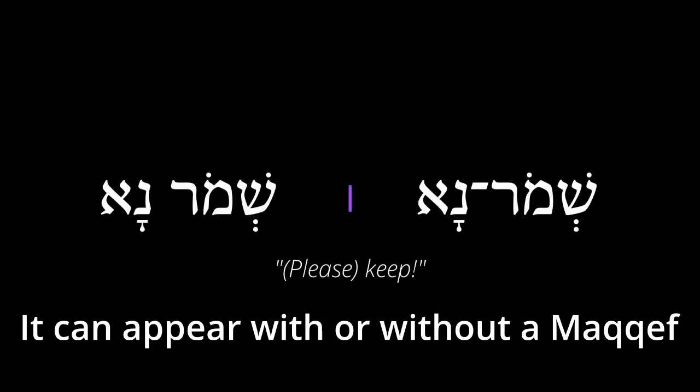There's another particle to be aware of, and that's na. It will follow an imperative, and it basically demonstrates that a request is being made politely — basically saying please. Na is please. Now you don't always have to translate na. If the context seems to need it, go ahead and include please in your translation. If the context doesn't seem to need it, don't include it. Just be aware na is not exclusive to imperative — as you learn more stems and conjugations, you'll learn more about the na particle.